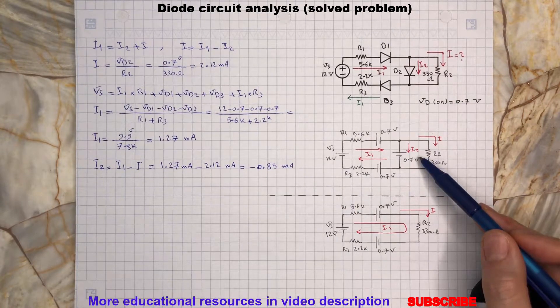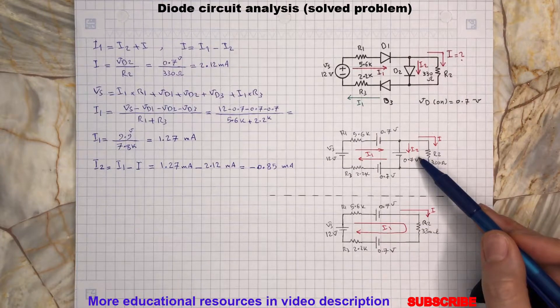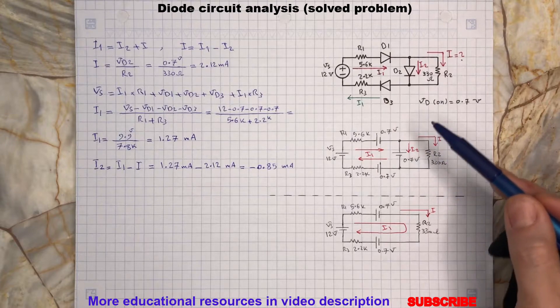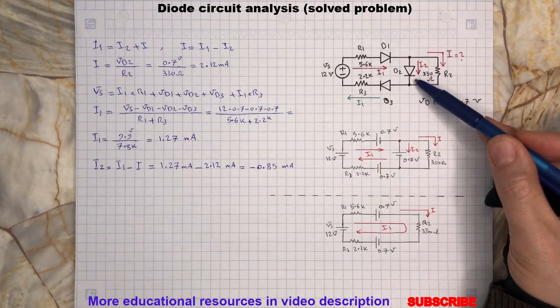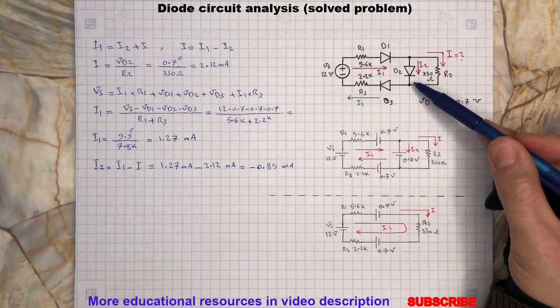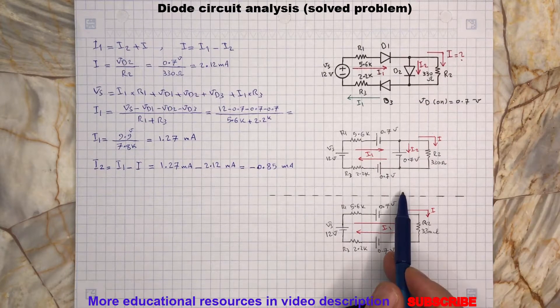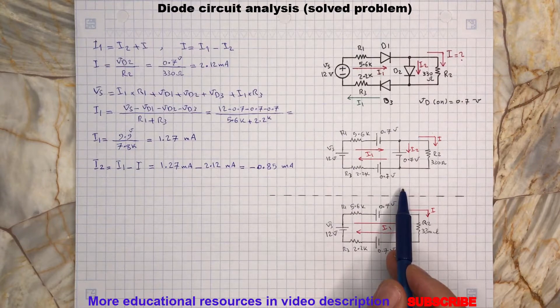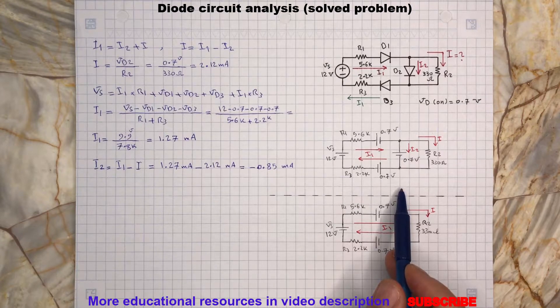Well, as you can see here, the current I2 becomes a negative value, which means our assumption about D2 being on was not correct, so we won't have 0.7 volts across R2. Now we know that D2 must be off, so we remove it from our analysis and we'll try to find the current flowing through R2.